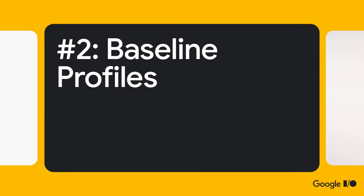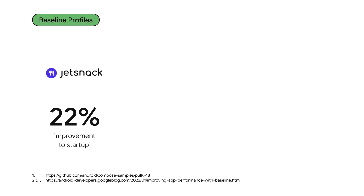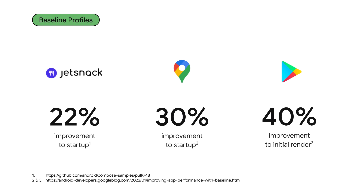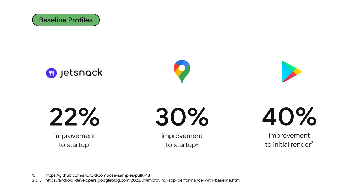Number two: be sure to check out baseline profiles. They let you guide the Android runtime about which code paths should be pre-compiled rather than interpreted, potentially having a dramatic effect on critical user journeys like app startup. Many Jetpack libraries already ship baseline profiles, but learn how to add them to your own apps and libraries to boost their performance.